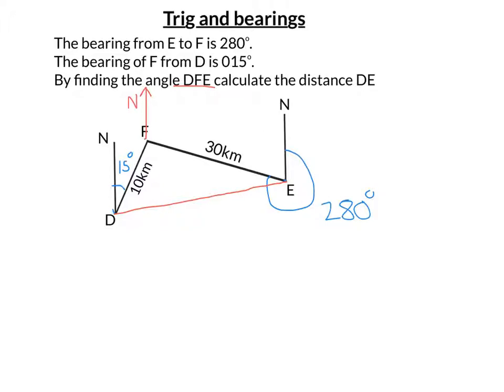Well, why am I doing that? Well, it's because with the other two north lines, they're all parallel. They're all going to north. So I can start using some of my angles in parallel lines rules.